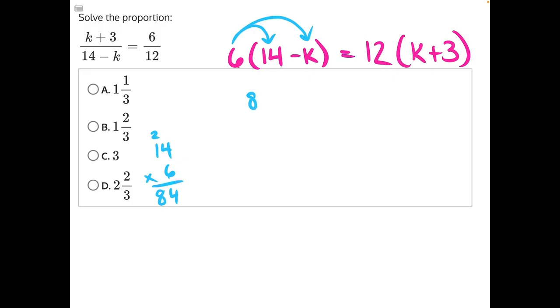So we have 84 - 6k = 12k + 36, where 12 times k gives us 12k, and 12 times 3 gives us 36.